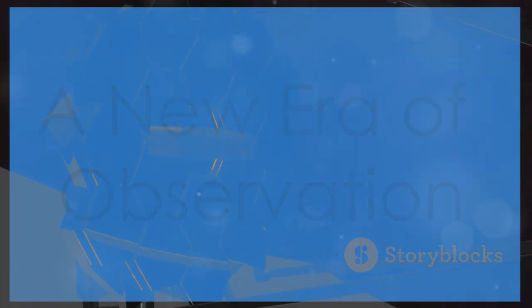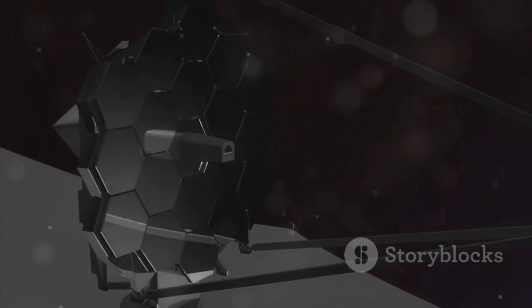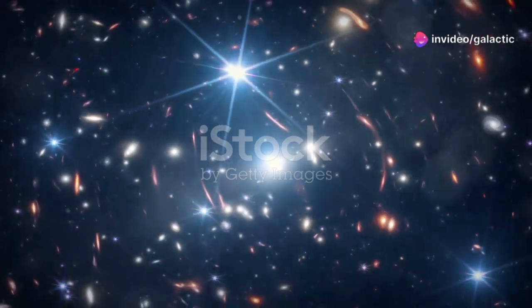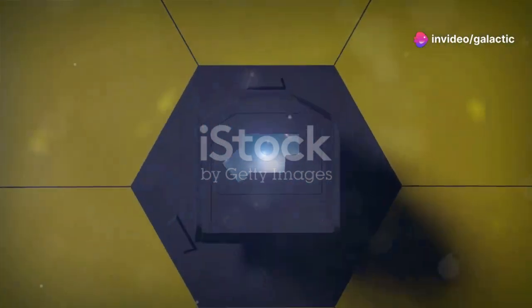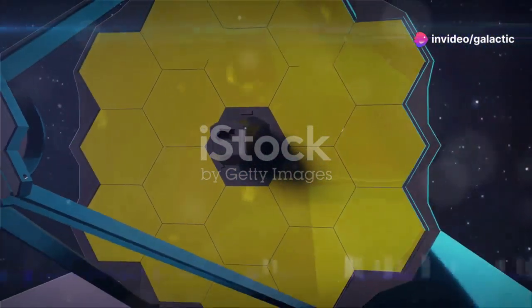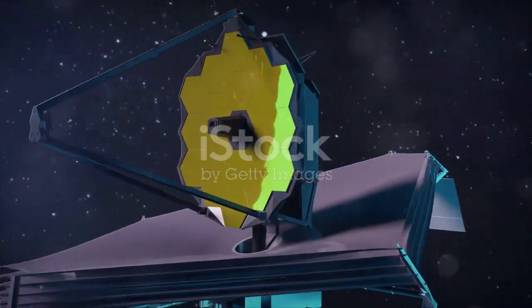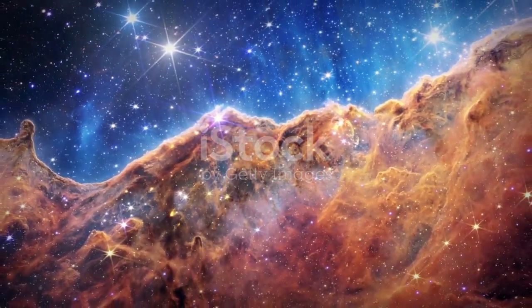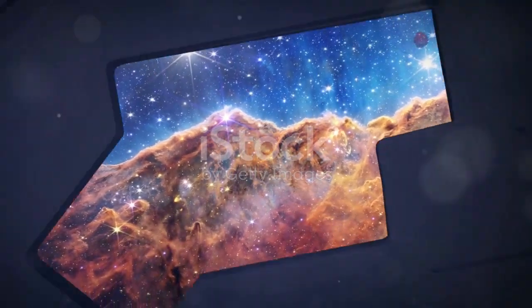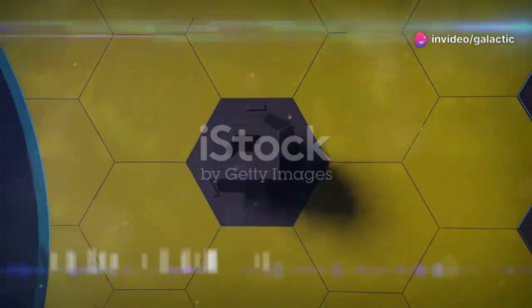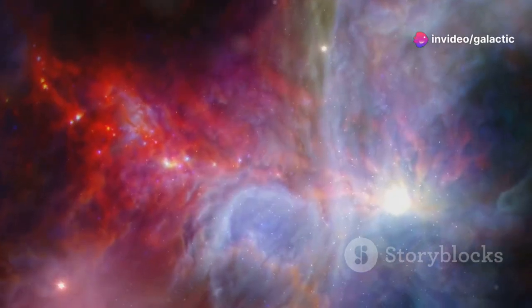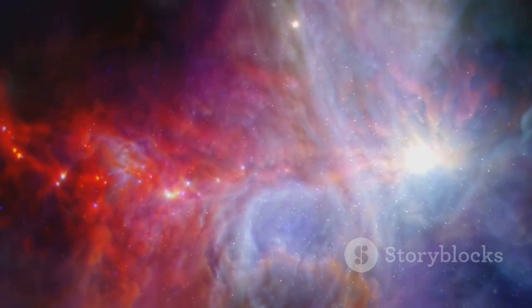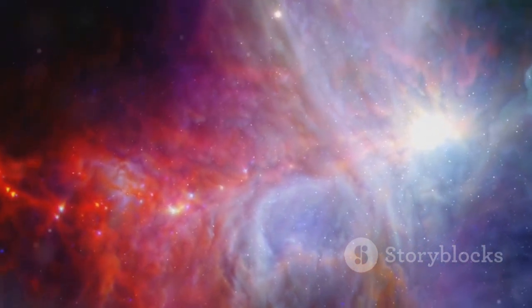The James Webb Space Telescope, humanity's most powerful eye on the cosmos, has revolutionized our understanding of Betelgeuse's final act. This marvel of engineering and science has opened up new frontiers in our quest to comprehend the universe. Unlike its predecessors, Webb can peer through the veil of dust and gas that often obscures dying stars. This capability allows it to capture images and data that were previously unattainable, providing a clearer picture of the life and death of stars.